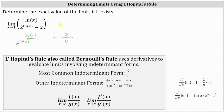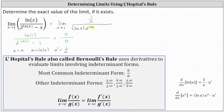Applying L'Hôpital's rule, we have the limit as x approaches 1 of the derivative of natural log x, which is 1 divided by x, divided by the derivative of 2 to the power of natural log x minus x. To differentiate 2 to the power of natural log x, we apply the derivative formula shown below, which includes the chain rule. In our case, a equals 2, u equals natural log x, and therefore u′ equals 1 divided by x. The derivative of 2 to the power of natural log x equals natural log 2 times 2 to the power of natural log x, times u′, which is 1 divided by x, and then minus the derivative of x, which is 1.